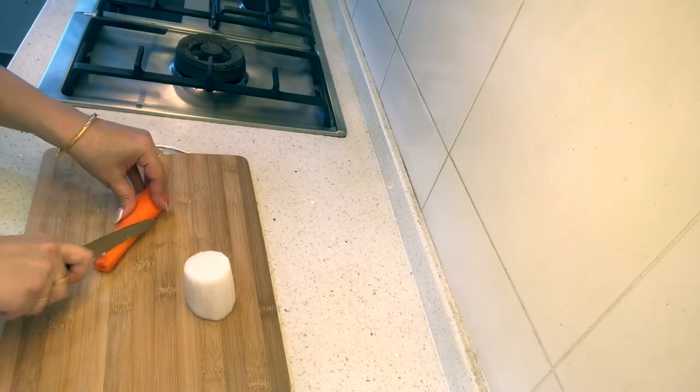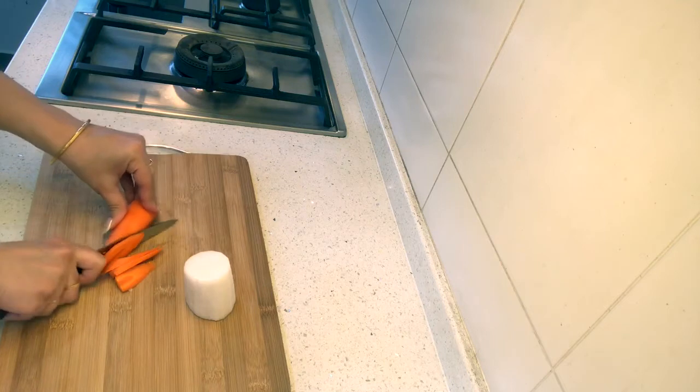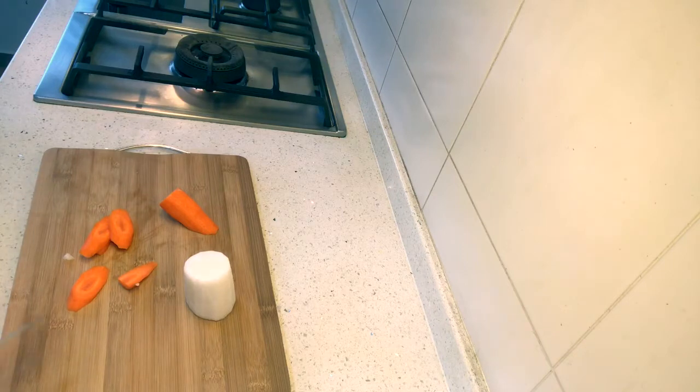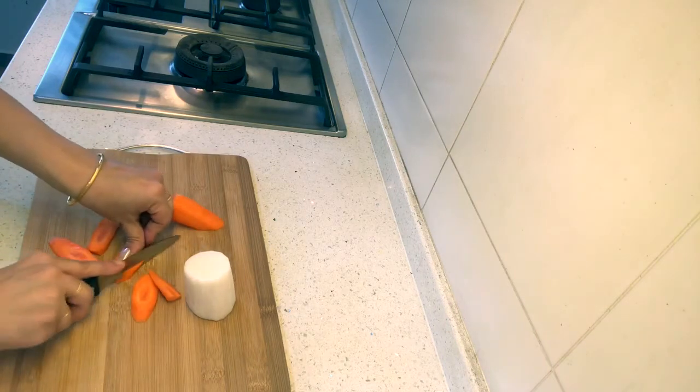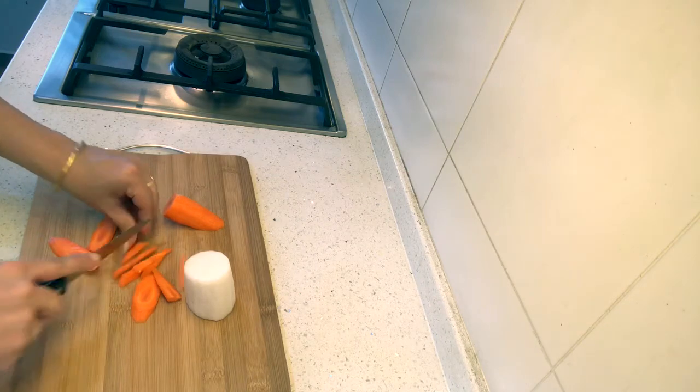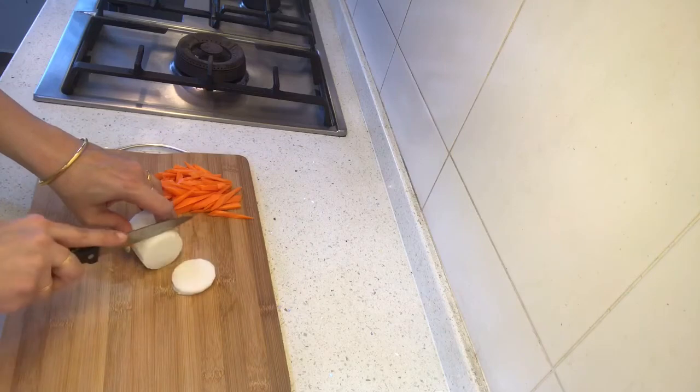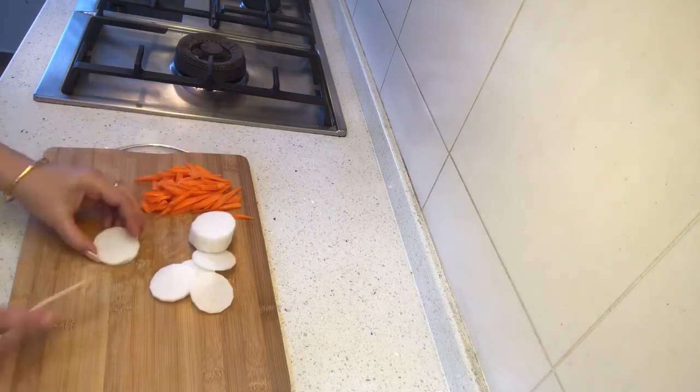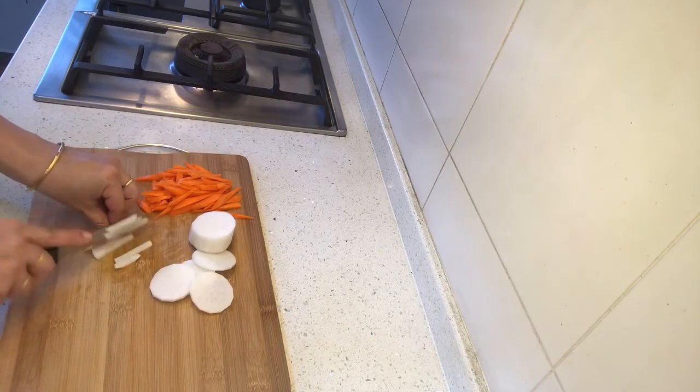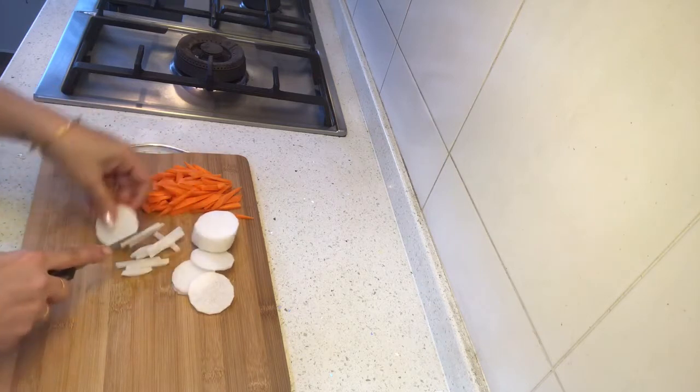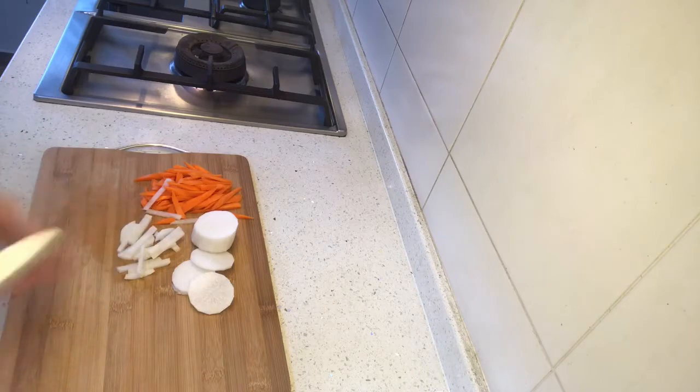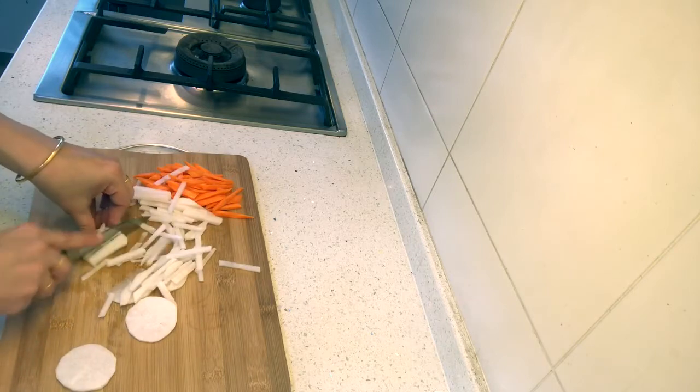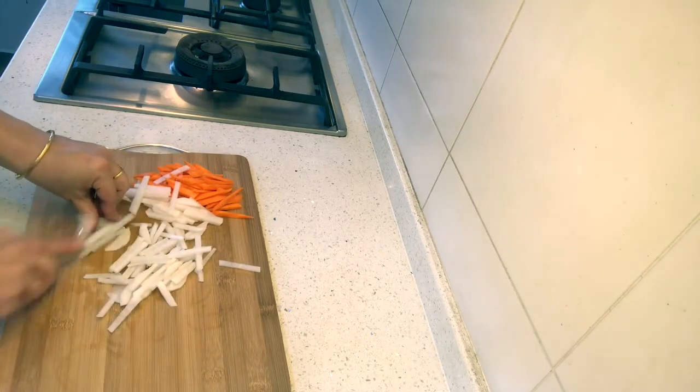Now we'll cut our vegetables. You can use as many vegetables as you like. I will be using carrot and radish today. We are going to cut them into thin slices like this. The same way we will cut the radish into rounds, and then just cut them into matchstick cuts.